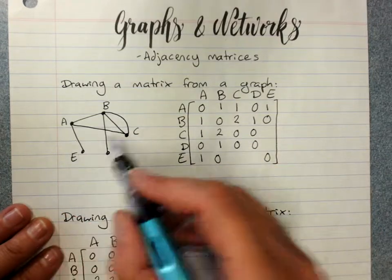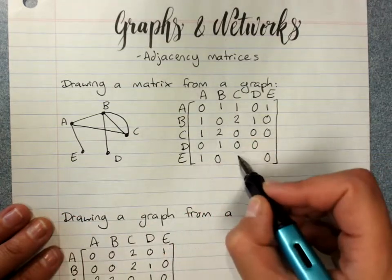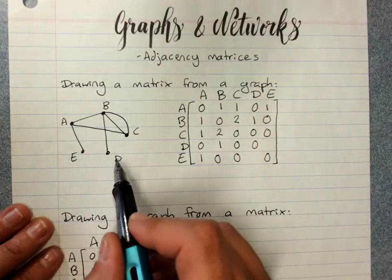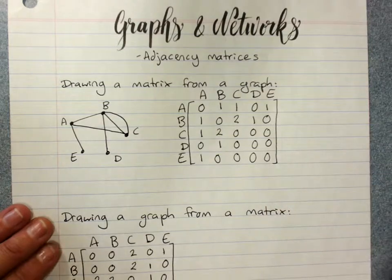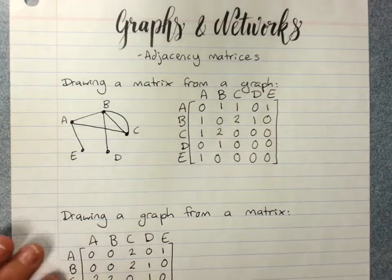So D to C is none. C to E, also none. So E to C is none. And I've just got D to E, which is again, none. So that's a very boring corner of the matrix. Please ignore the Harley outside.